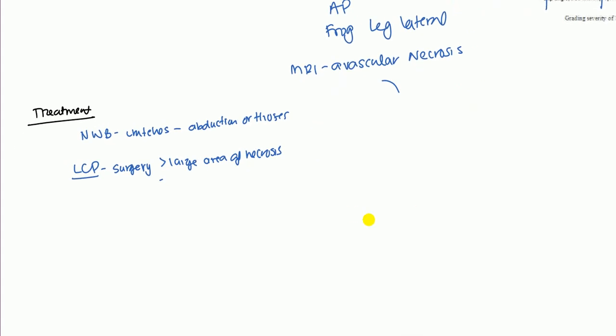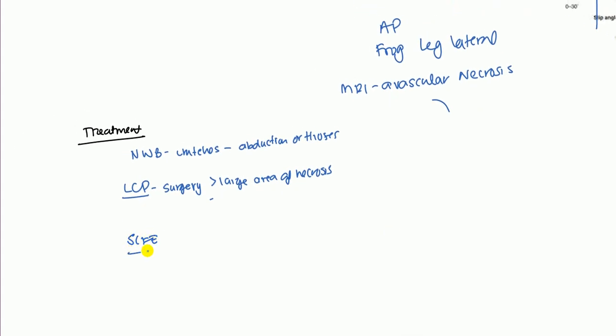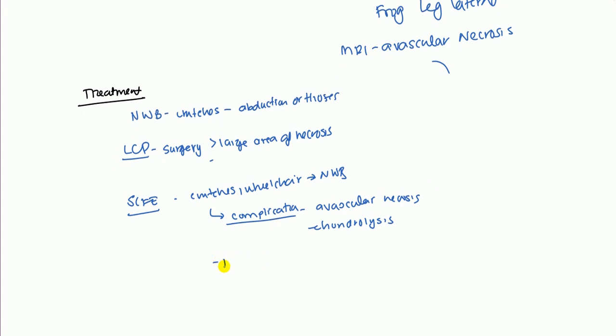With the slipped capital femoral epiphysis, what you want to do is get an orthopedic consult. Here, you also want to use crutches, wheelchairs, anything to make it non-weight-bearing. The only thing here is you do have more severe complications. You can lead to avascular necrosis and you can lose the head altogether. You can also get chondrolysis. This is basically when the articular cartilage starts to break down. And you can also get femoroacetabular impingement. This is when the femoral head goes into the acetabulum and it causes the blood supply there to impinge and even the nerve supply there.